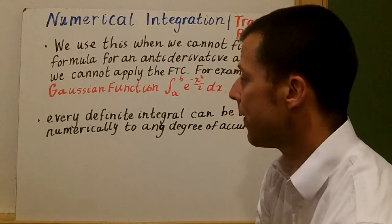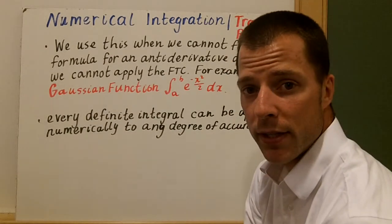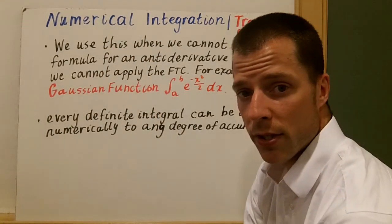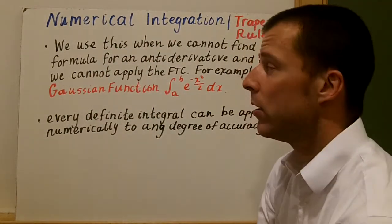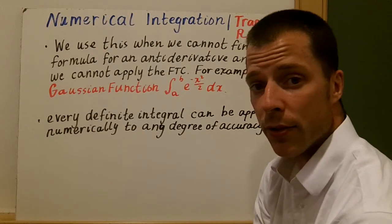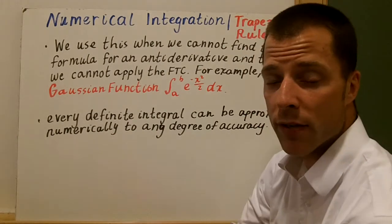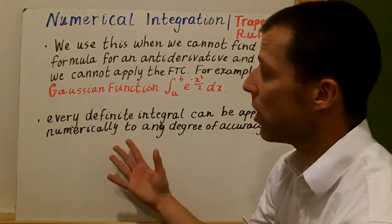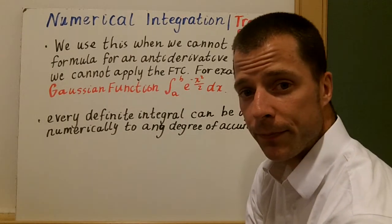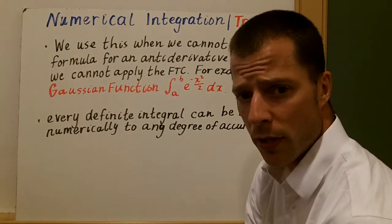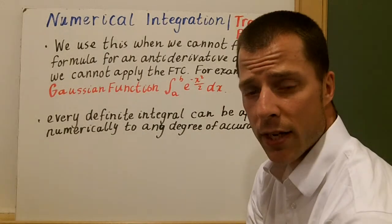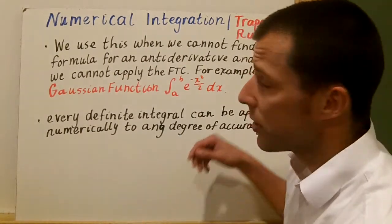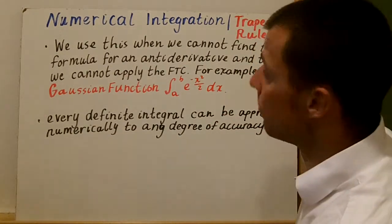It's important to remember that every definite integral can be approximated numerically to any degree of accuracy. When we do numerical integration, actually taking the integral and looking at a certain interval will be the best way to see how close we are. Error approximation with the trapezoid rule is a BC Calculus topic and won't be covered in this lecture. Let's look at some examples.